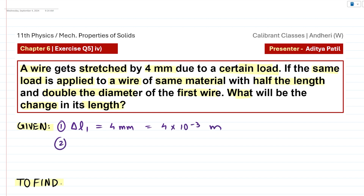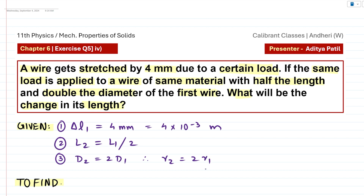Next is the length of the second wire. We call that L2, and it is said to be the length of the first wire L1 divided by 2. Similarly, the diameter of the second wire is twice the diameter of the first wire, so D2 is equal to 2D1. Therefore the radius of the second wire is also twice the radius of the first wire, so R2 is equal to 2 times R1.